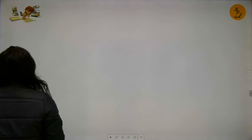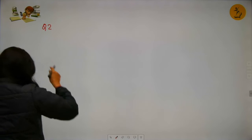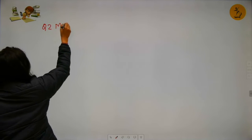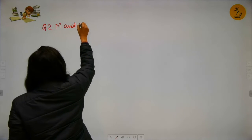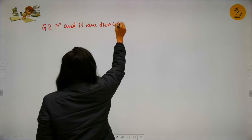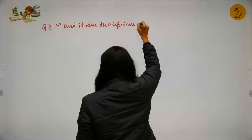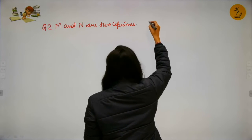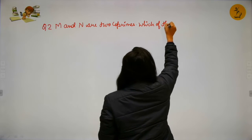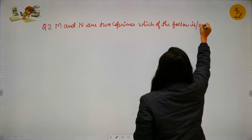Question number 2: M and N are two co-prime numbers. Which of the following is/are true? Remember, co-primes are two numbers that share no common factors other than 1.